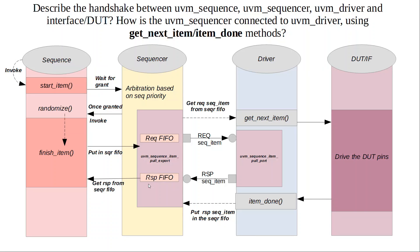finish_item is a blocking call and it's waiting on the response. Once it receives the response, it unblocks and the transaction completes. So this is the full protocol when we use the get_next_item and item_done methods — the protocol that gets followed between the sequence, sequencer, driver, and DUT, and back with the response to the sequence.